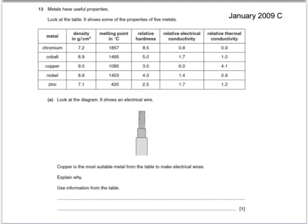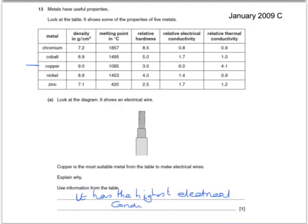Here's another table of information. This time we're shown an electrical wire. Copper is the most suitable metal from the table to make electrical wires — explain why. It's going to be nothing to do with melting point, density, or hardness. It's all going to be to do with electrical conductivity. Copper has the highest electrical conductivity.